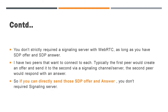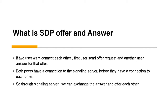Now let us look at what is an SDP offer and answer request. If two users want to connect to each other, the first user sends an offer request and the other user answers that offer. Both peers have a connection to the signaling server before they have a connection to each other, and through the signaling server we can exchange the answer and offer.